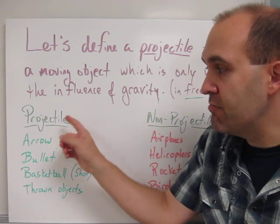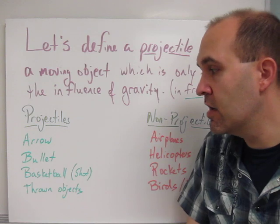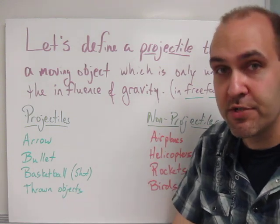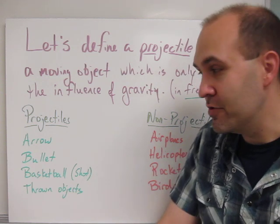Examples of projectiles would be an arrow or a bullet that's fired, a basketball or any kind of ball that you're using, or any other object that you throw. You'll see me throwing my keys in class probably a lot because they're convenient.